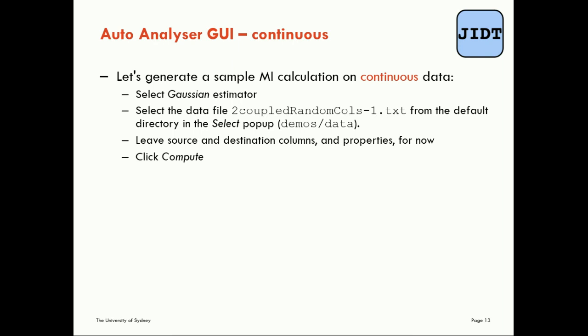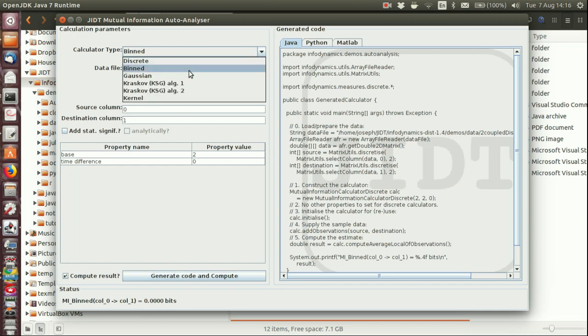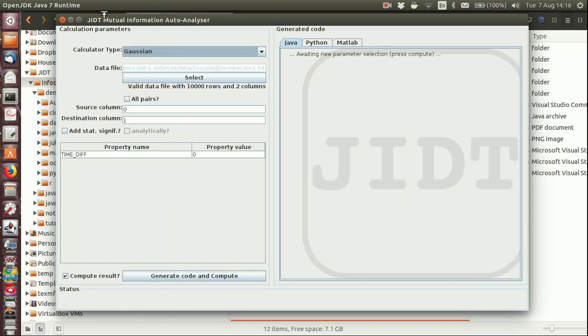We're going to use the two coupled random coles sample data sets. Let's grab our auto analyzer GUI. Again I've still got it open from the previous video. Now we're going to switch over to the Gaussian estimator. We can see yes it's parameter free. The only property value here is the time difference which we've already seen for the discrete valued mutual information but we're going to leave that as zero for the moment.